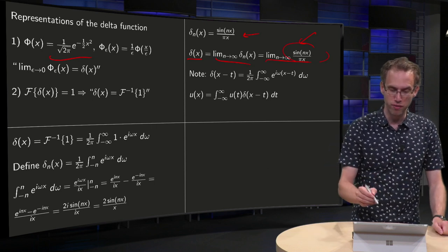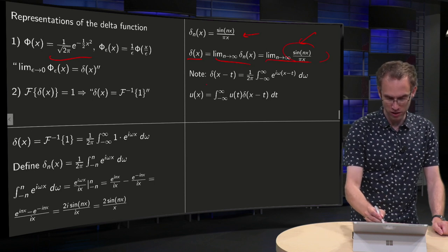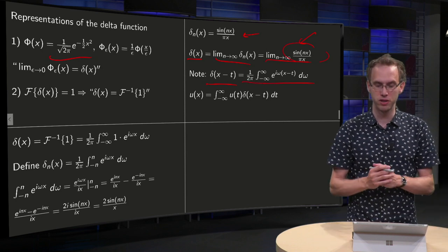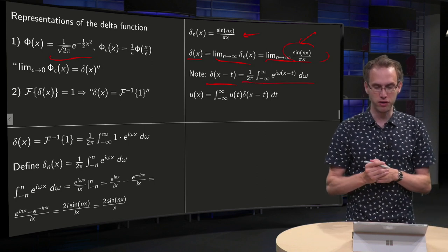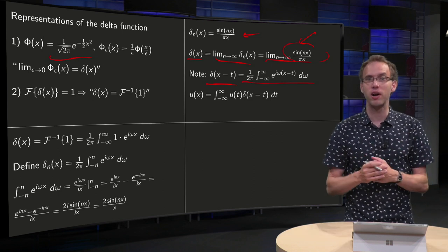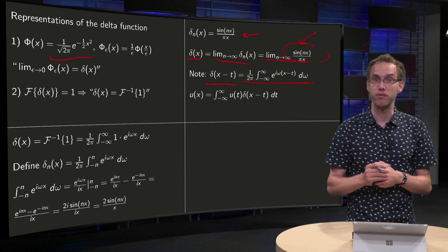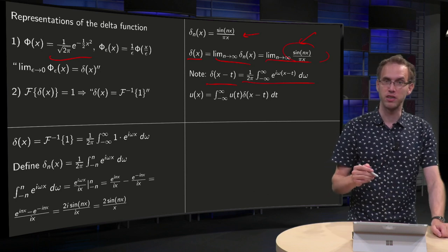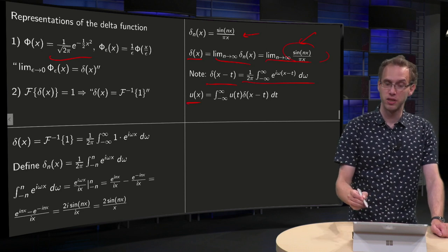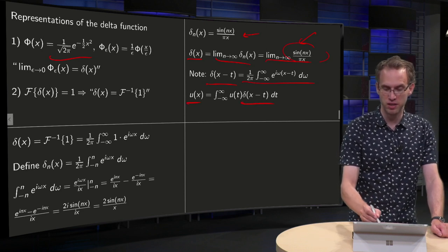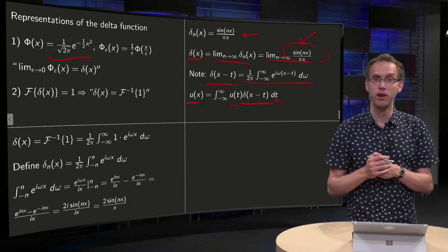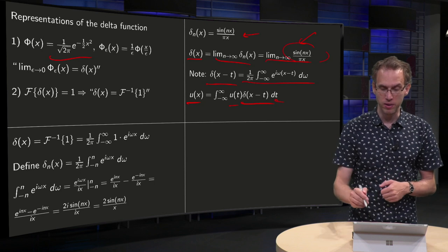Notice, we can use this formula we have here, for the delta function, using the inverse Fourier transform over here, to find or to memorize the formula for Fourier and inverse Fourier transform. How do you do that? Well, you know your u(x), you can use your delta function inside integrated with respect to t and u(t), it will exactly give you your u(x).